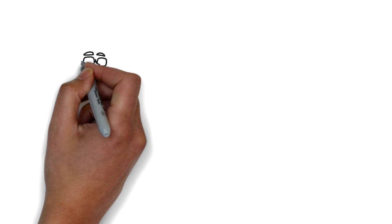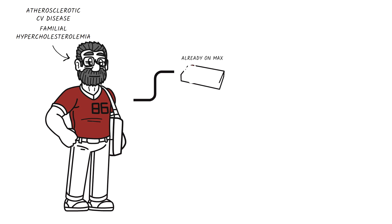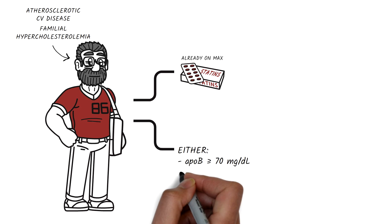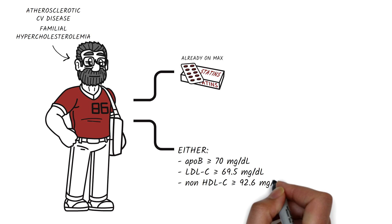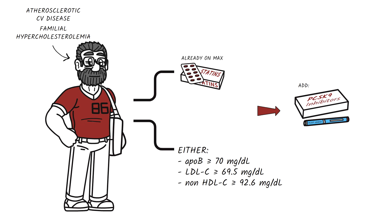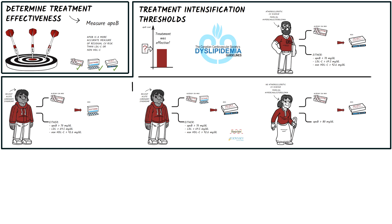If your patient has atherosclerotic cardiovascular disease and also has familial hypercholesterolemia, and is already on a maximally tolerated dose of statins with or without ezetimibe therapy, and their ApoB is ≥70 mg/dL, or LDL-C ≥69.5 mg/dL, or non-HDL-C ≥92.6 mg/dL, then a PCSK9 inhibitor should be added. Other guideline bodies may suggest different treatment intensification thresholds, and we encourage clinicians to learn about what is being recommended in their area.